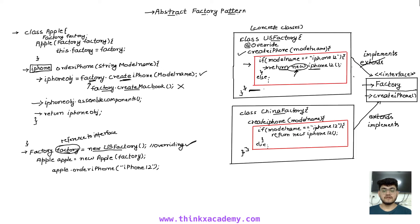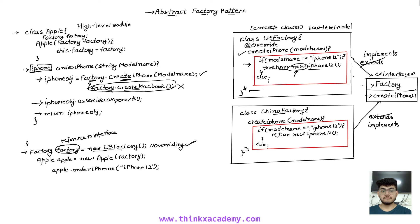So this will return new iPhone 12, and calling create MacBook on this reference is not going to work. Our code is now loosely coupled because it does not depend on the factory class — it depends on an interface, and the implementation is provided by the concrete class. You can consider the concrete factory as a low-level module and the calling code as a high-level module. Both are now dependent on the interface, which is the abstract factory. This is the dependency inversion principle: high-level and low-level modules should not depend on each other; they should both depend on interfaces.